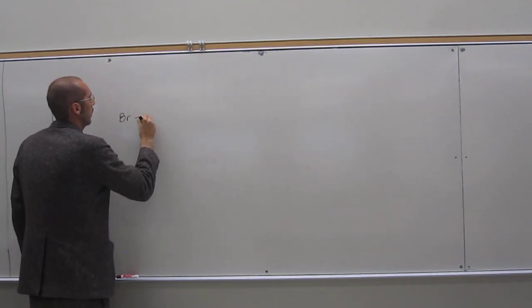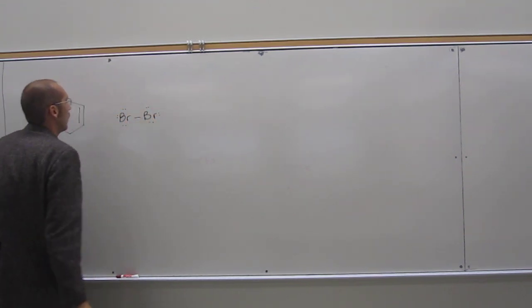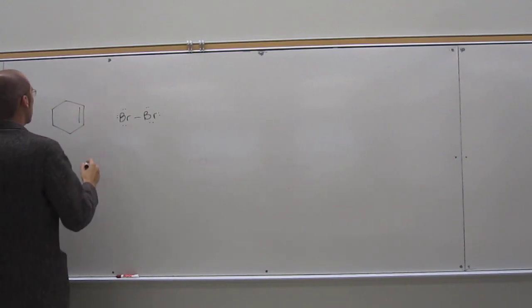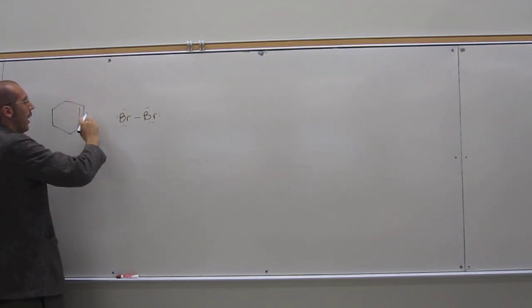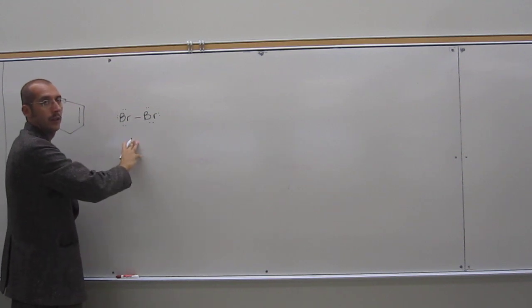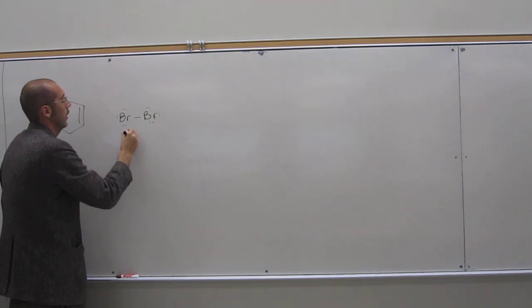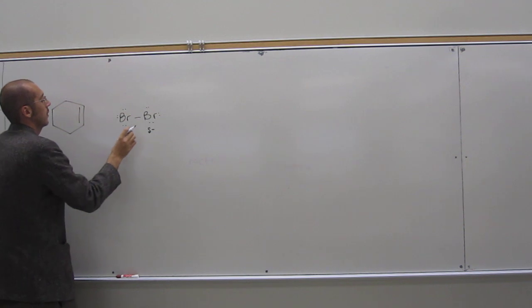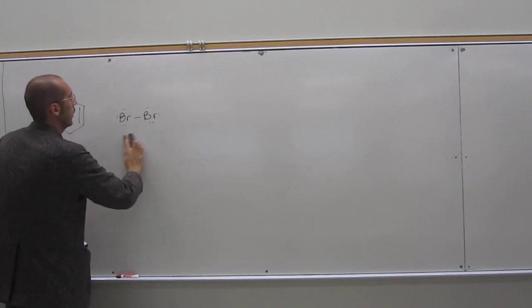So bromine looks like that, right? What's going to happen is once this gets close to this pi bond, you're going to have a dipole form, an induced dipole. That's going to make this bromine partially positive, this one partially negative because of the negative charge here. So what's going to happen, of course, is this bromine here is going to become electrophilic, as you already know.